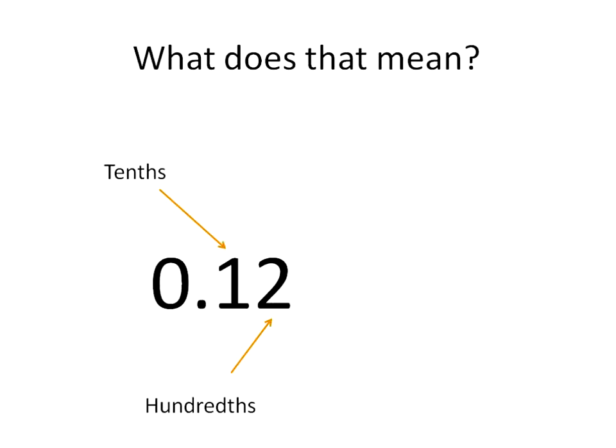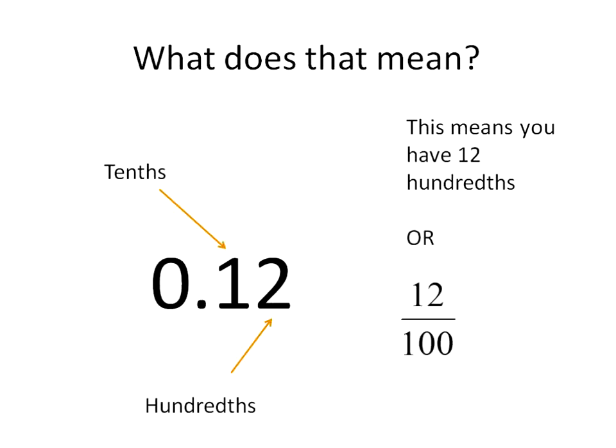Here's an example: 0.12. That means it has one tenths and two hundredths, which means you have twelve total hundredths — twelve out of one hundred. And that's it. If you remember the names of the placeholders, you can write these fractions really fast. Now, twelve out of one hundred — we will reduce that down to lowest terms. Each has a common factor of four, so we divide the top and bottom by four and reduce it down to three over twenty-five.